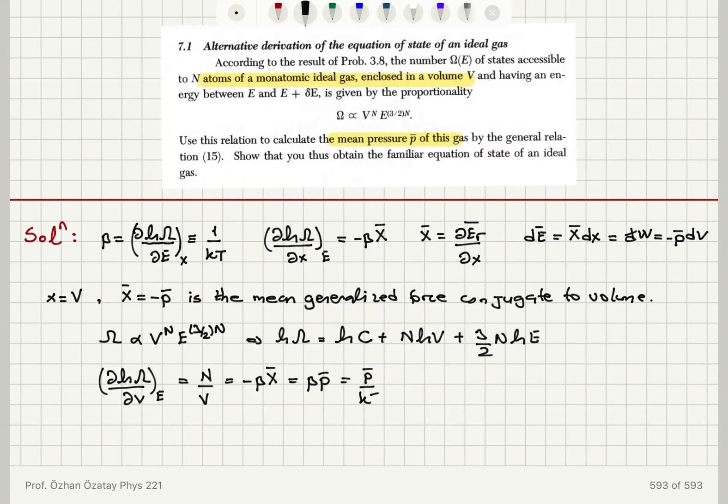which is beta times p bar, so it is p bar divided by kT. Therefore, I find that p bar V is equal to N kT.